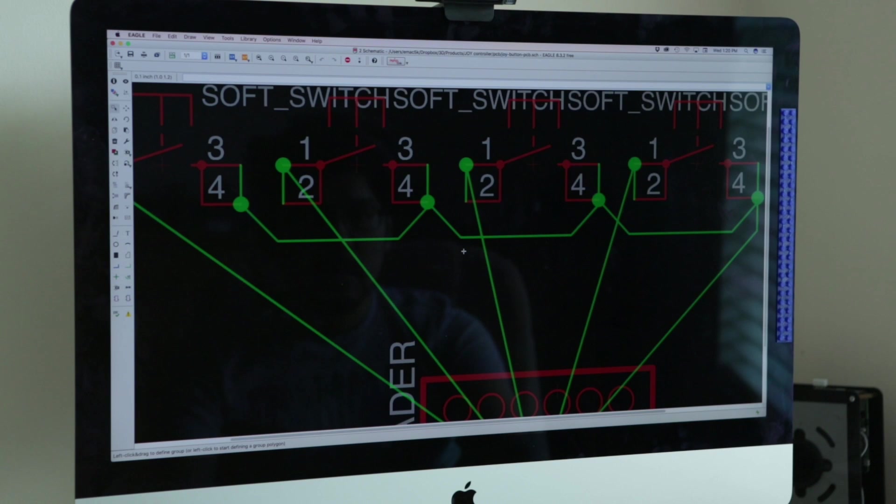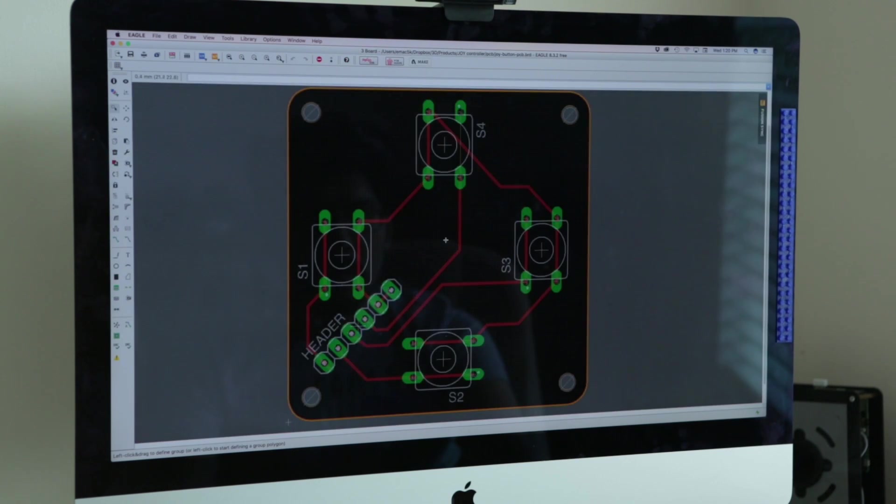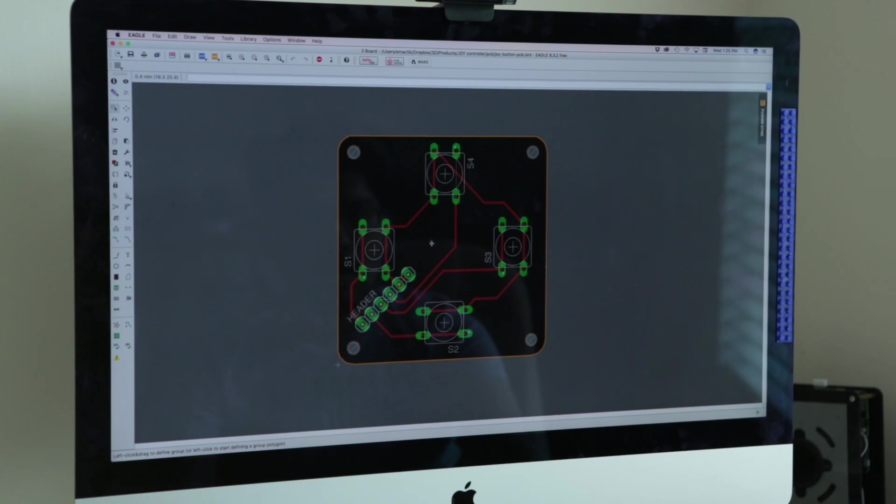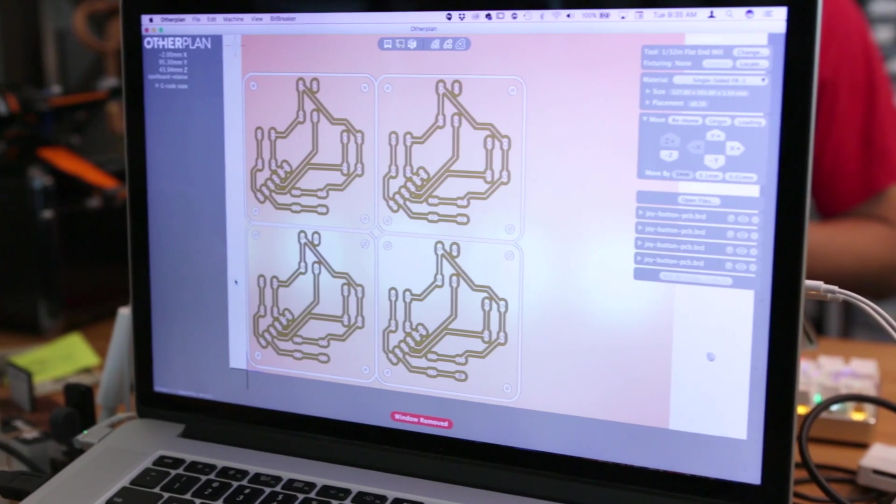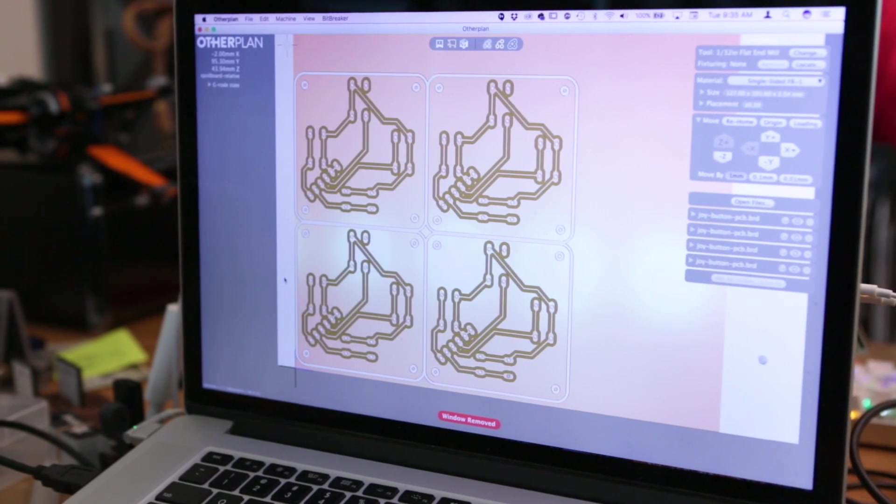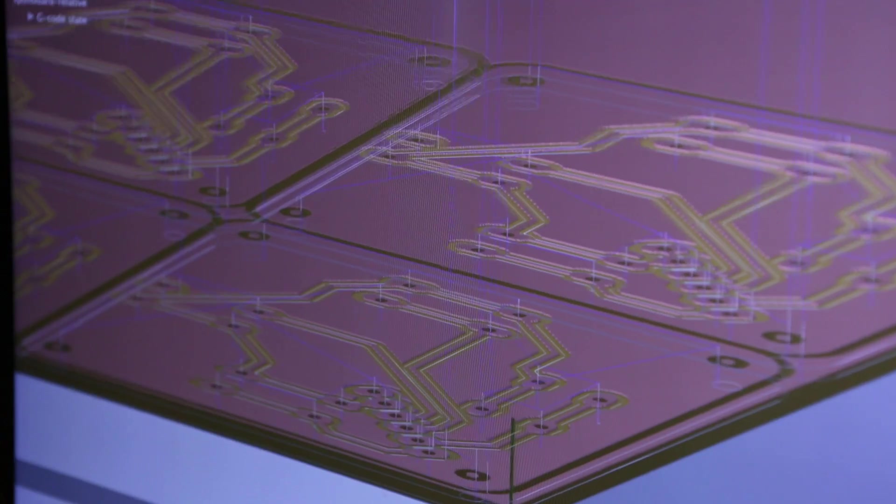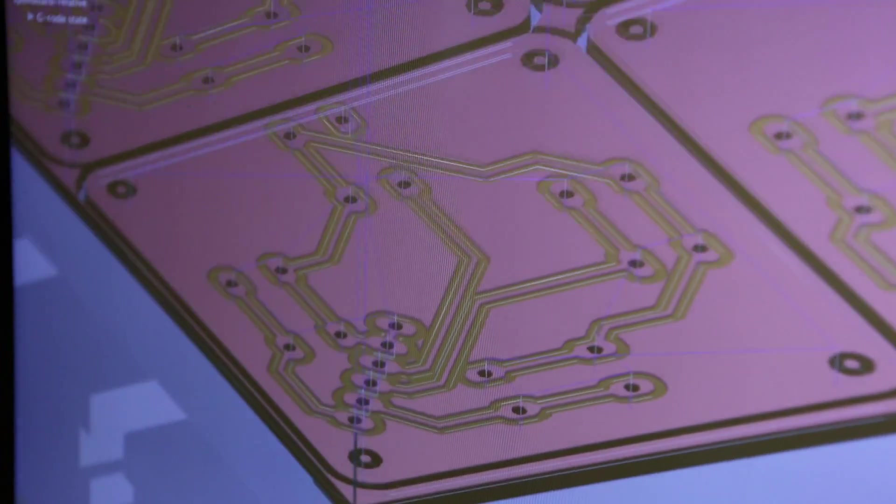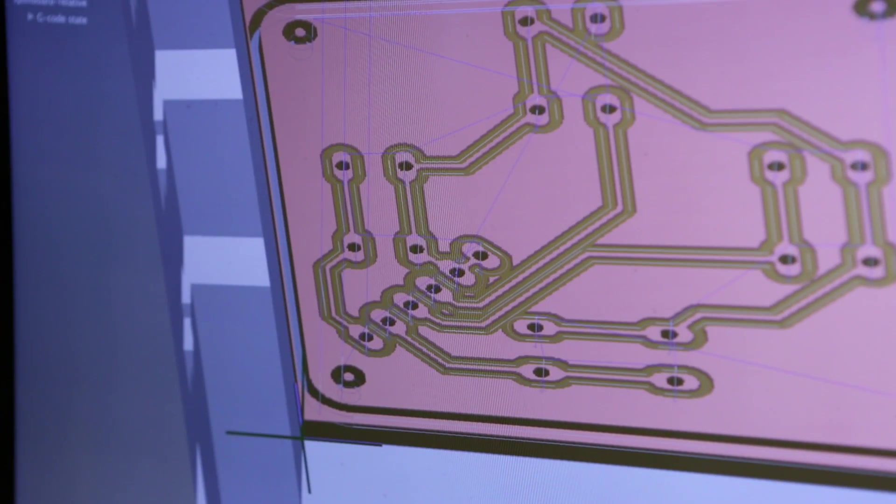I've been learning how to create parts in EagleCAD and designed a simple PCB to test out the new footprint. The Otherplan software has native EagleCAD support so it's really easy to set up PCBs. I routed the board specifically for a single tool so I had to make sure the clearances were within the tool's diameter.